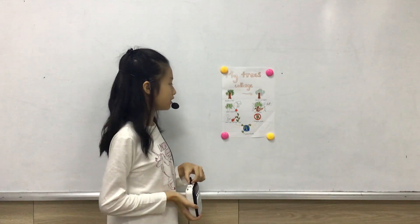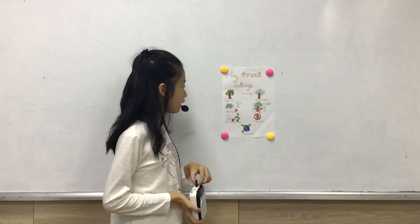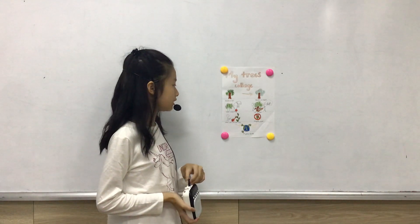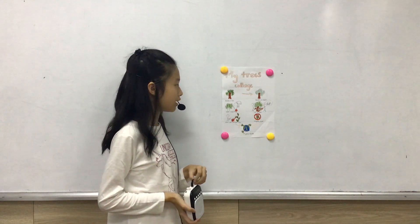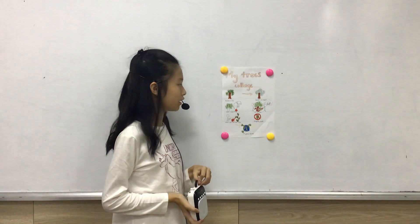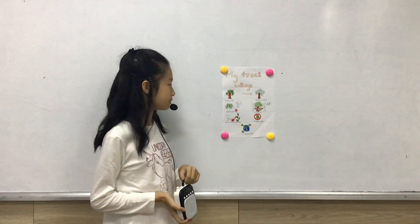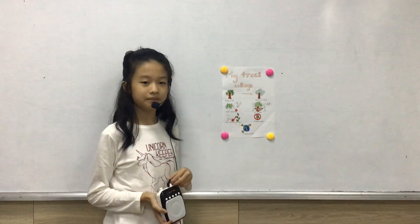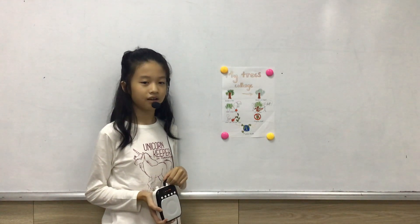Trees breathe in CO2 gas and breathe out oxygen. We can have oxygen by planting trees. Trees can make many things like paper, house or food.